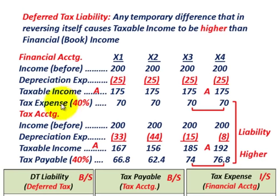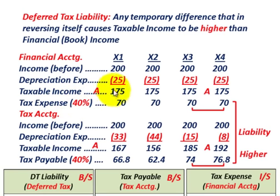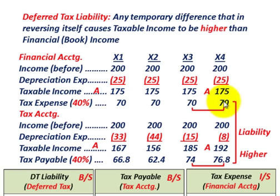For tax expense — remember, in financial or book accounting you refer to it as a tax expense — at 40% times taxable income of $175,000, we get a tax expense of $70,000 for each of these four years.